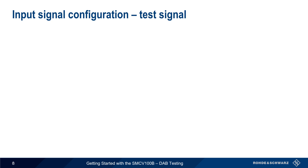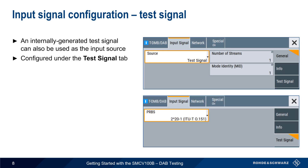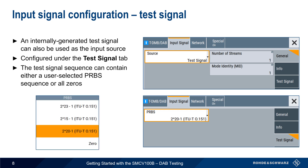The third source type is an internally generated test signal, configured under the Test Signal tab. Various PRBS, or pseudo-random bit sequences, can be inserted into the test signal, or the signal can consist only of a string of zeros. Note that network mode must be set to MFN when using an internal ETI test signal.